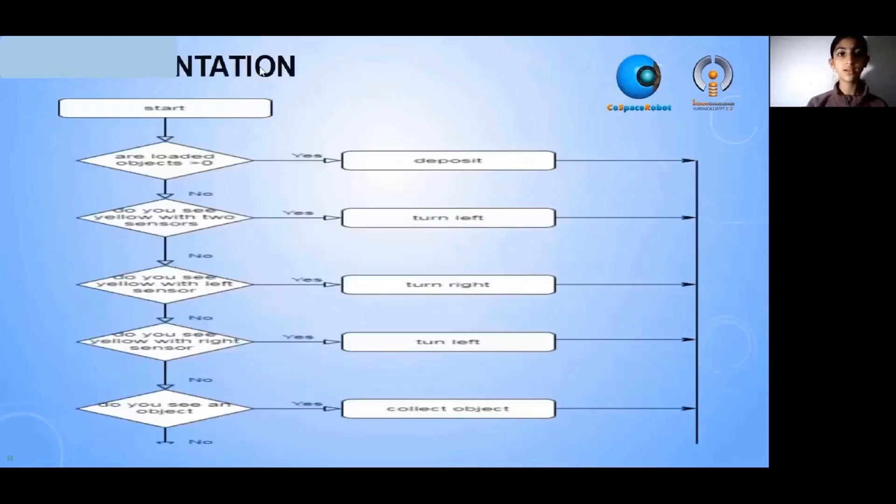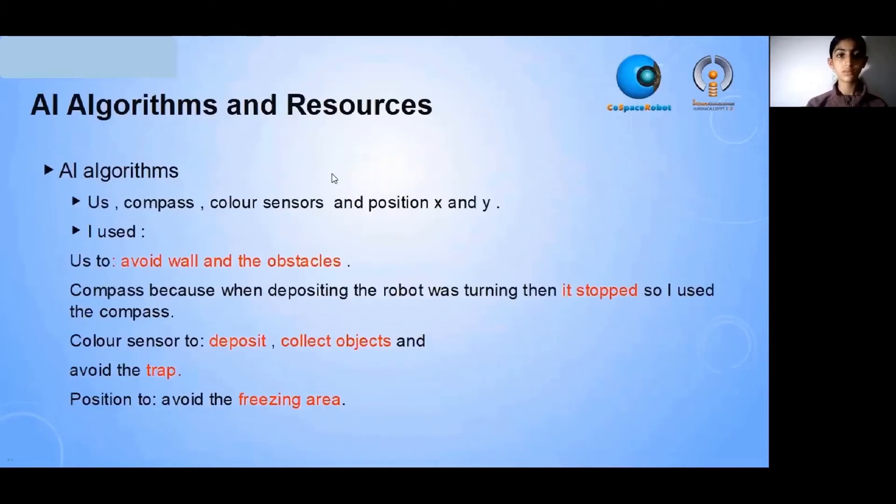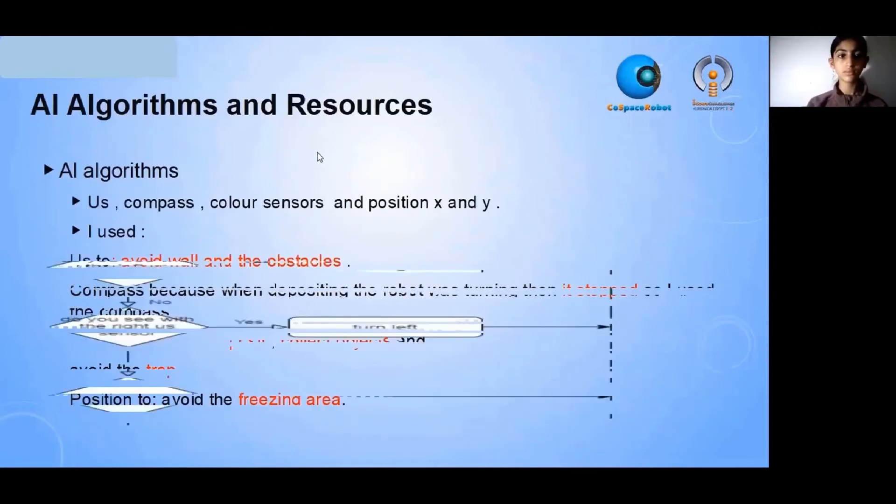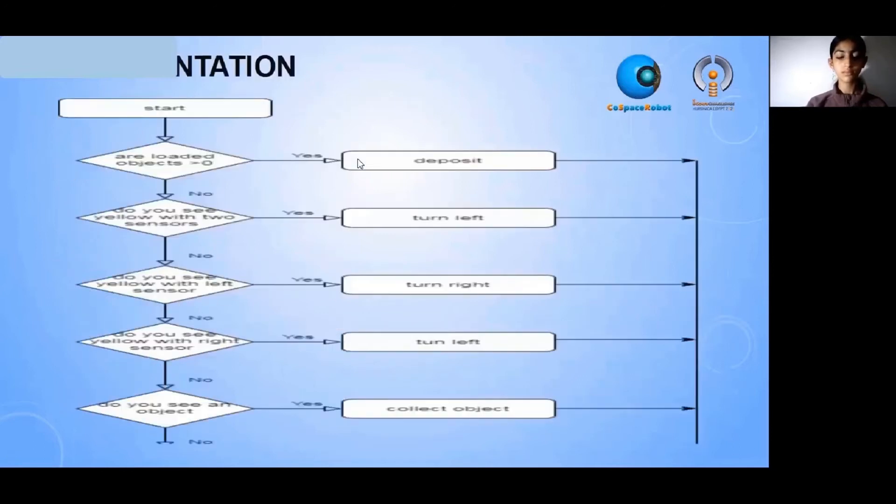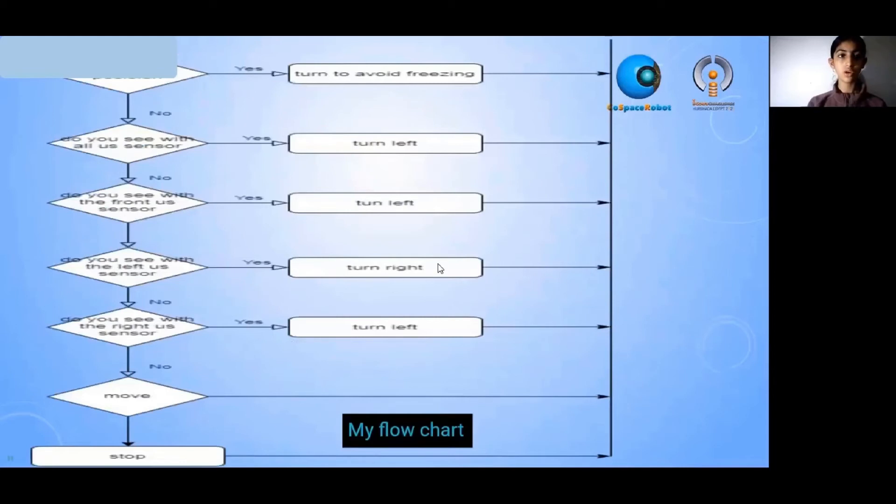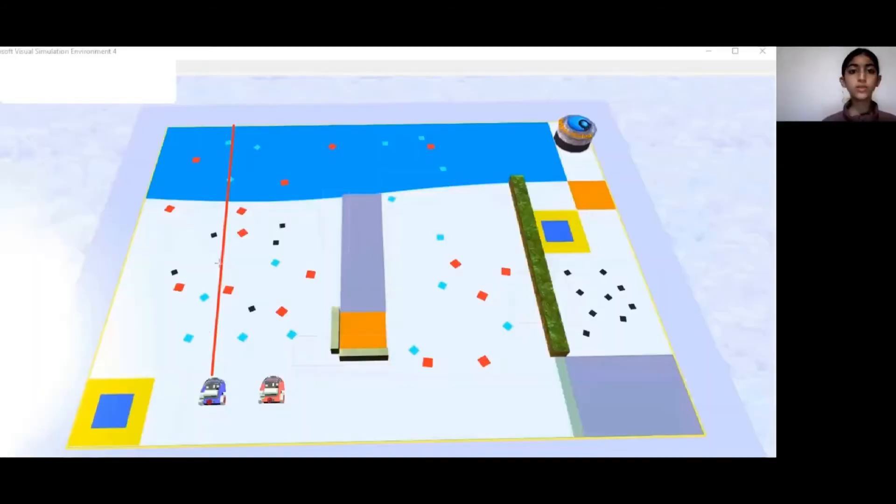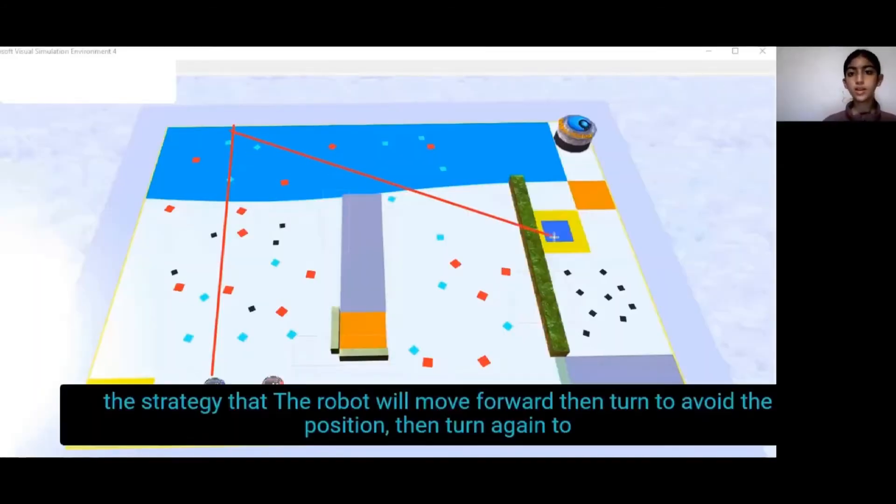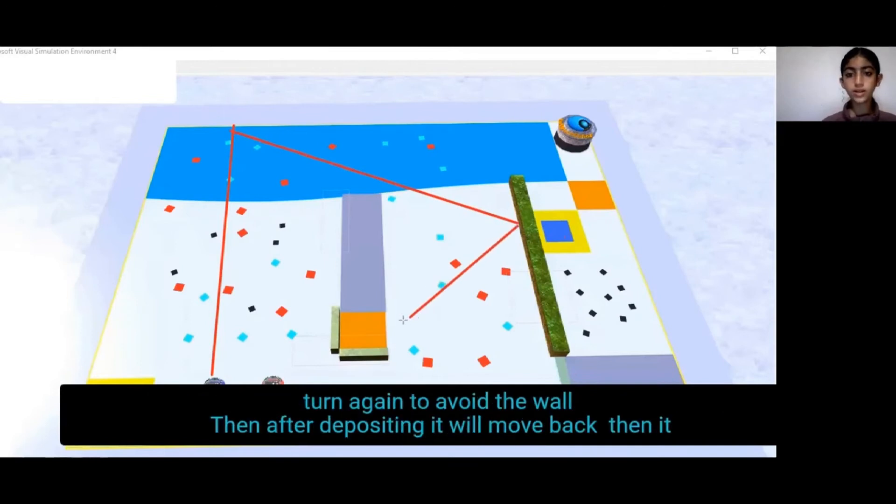This is my flow chart. My strategy is that the robot will move forward, then it will turn to avoid the position. Then, turn again to avoid the wall. Then, after depositing, it will move backwards.